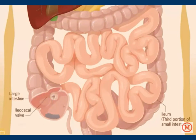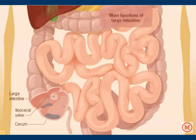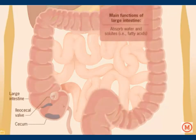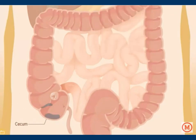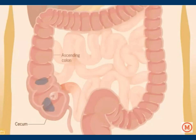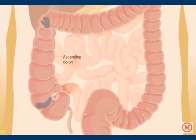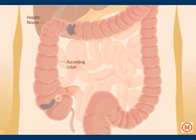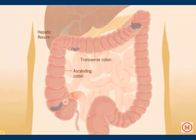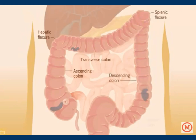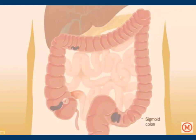The unabsorbed portion of the bolus passes out of the ileum and into the large intestine through the ileocecal valve. The first portion of the large intestine is called the cecum. The main function of the large intestine is to absorb water and solutes such as fatty acids, which help concentrate and form the stool. The bolus is pushed by a peristaltic wave up through the ascending colon, through the hepatic flexure, then through the transverse colon, through the splenic flexure, down the descending colon, and into the sigmoid colon, before entering the rectum.